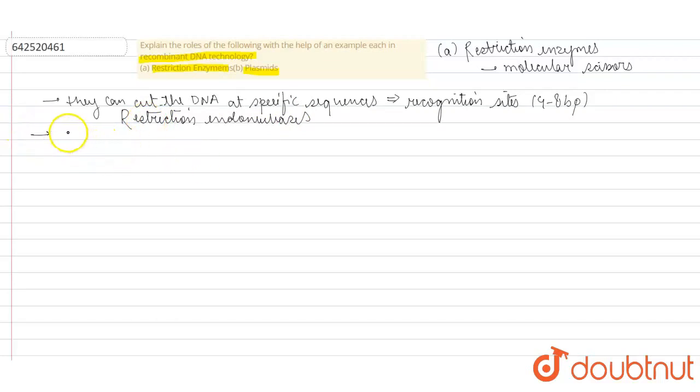A very common example of this Restriction Endonuclease is ECO-R1. This ECO-R1 has been isolated from Escherichia coli. And it recognizes a recognition site that is GAA-TTC. And it cuts between G and A. So this is the example of the Restriction Enzymes which are very important enzymes in recombinant DNA technology.